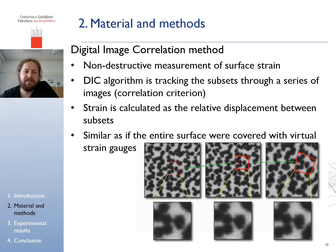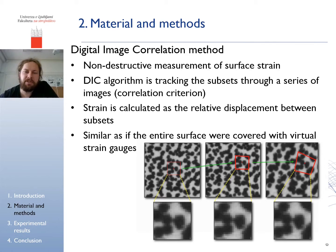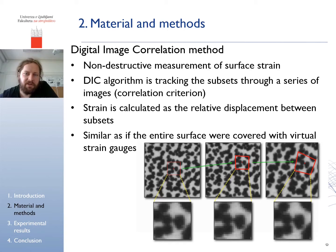DIC is a non-destructive surface strain measurement method. Our DIC setup was capturing images at peak loads of every cycle. The DIC algorithm starts by first dividing the initial image into subsets, which are then tracked throughout all images. An example for one subset is seen here. The final result consists of relative subset displacement from its original position with a natural consequence of strain derivation. It appears as if the entire surface was covered with virtual strain gauges.